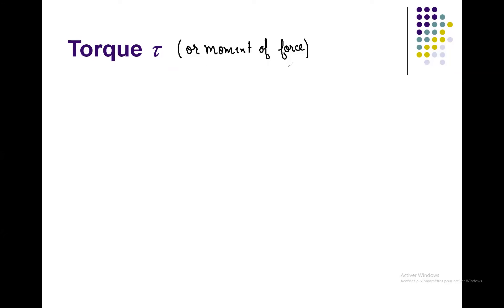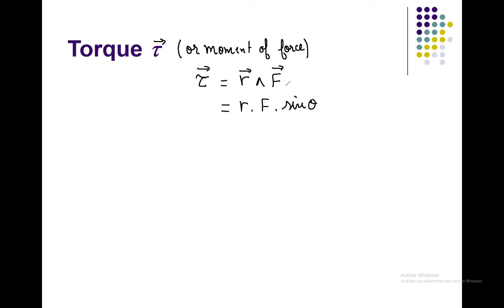Torque, tau, or moment of force is a vector quantity, so we have to specify the direction, the magnitude, and the unit. In general, tau is given by the cross product of the position vector r and force F: τ = r × F. Using the cross product formula, this equals r times F times sine of the angle between r and F.